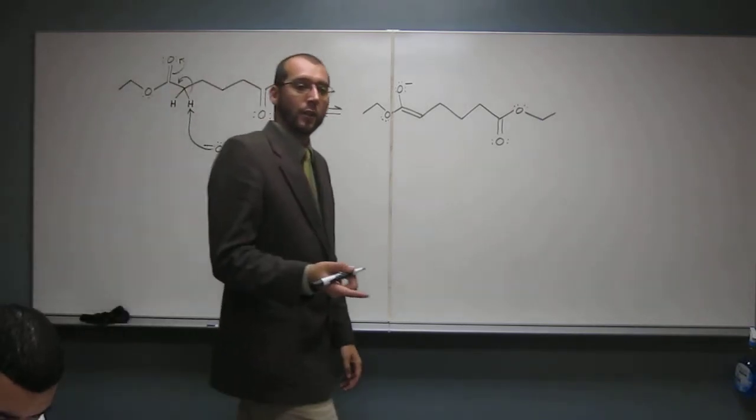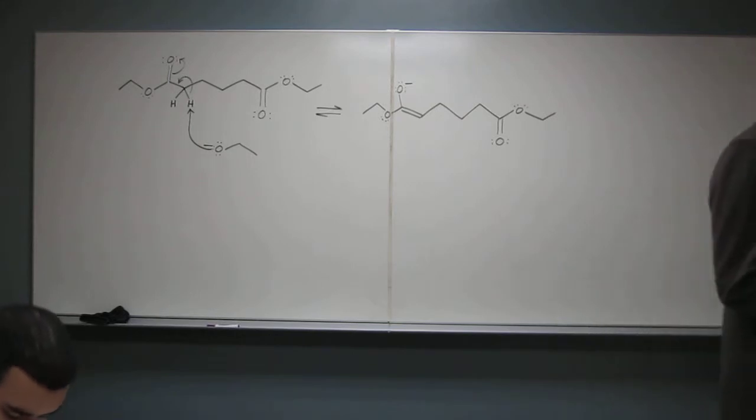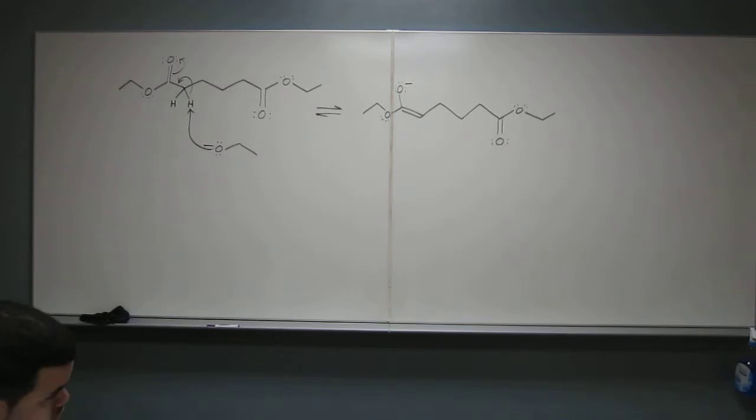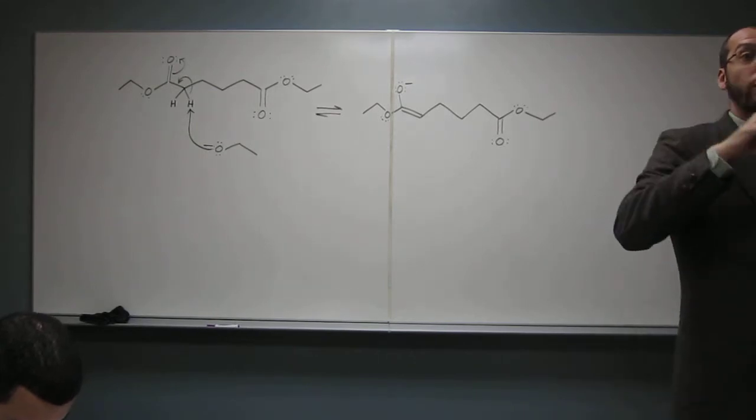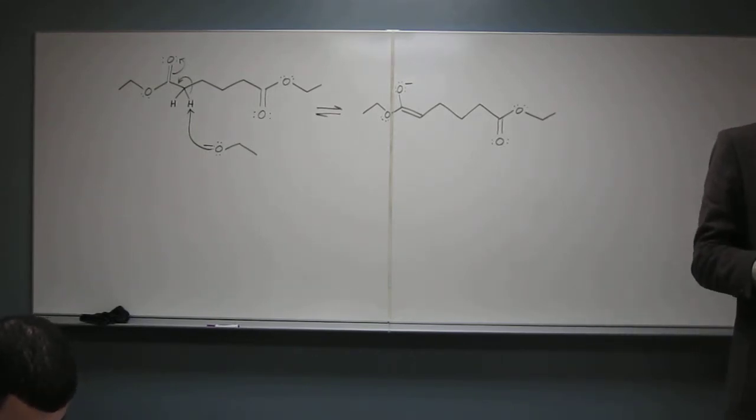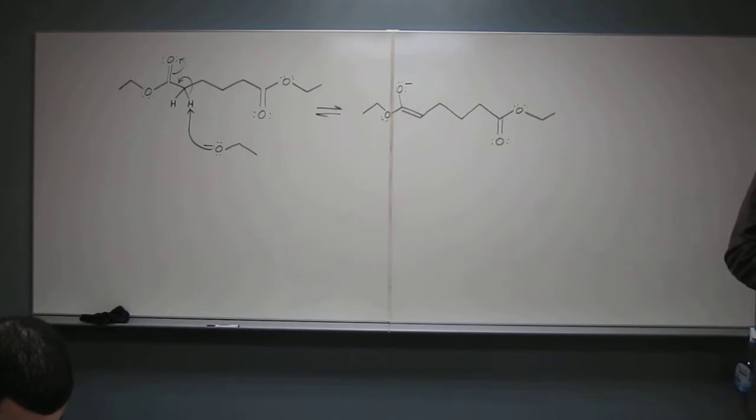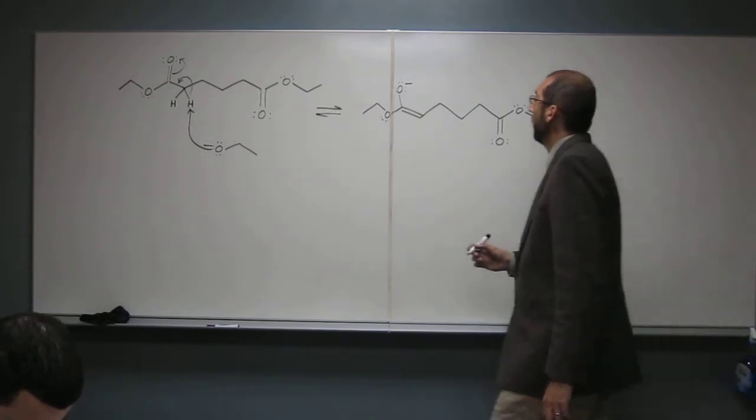Remember, a Dieckmann condensation, that's just a Claisen condensation that's intramolecular. So, whenever it says Dieckmann condensation, look for an intramolecular reaction that's going to happen, a cyclization. Specifically, a cyclization that'll be a five carbon cyclic ring or a six carbon because those are the most stable. Anything smaller than five or bigger than six is very difficult to form.